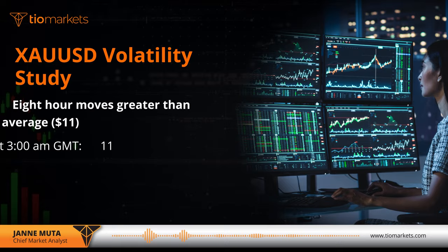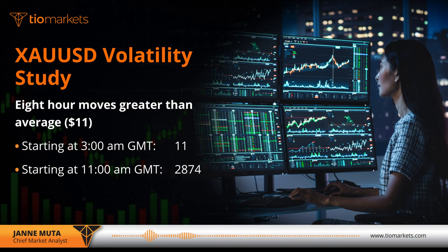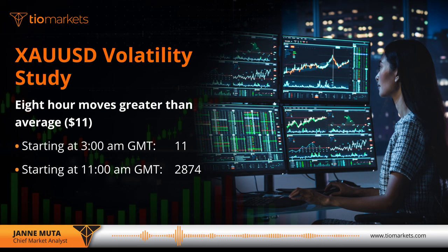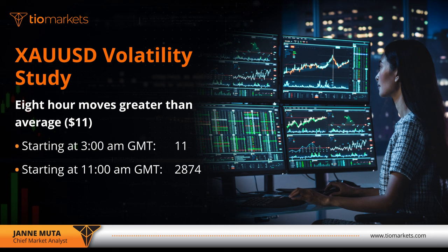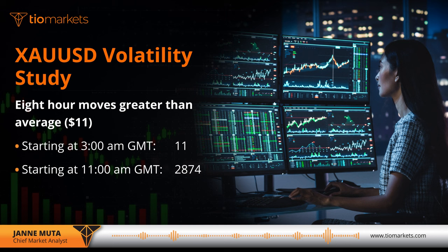I then made a comparison between the 8-hour periods starting at 3am GMT and those starting at 11am GMT. My question was: how often over these time periods did price move more than the average of $11? The difference is very clear. During the Asian session, only 11 times out of 13,247 observations was there movement bigger than $11 during that 8-hour period. But for the period starting at 11am GMT, there were almost 2,900 times when the market moved more than the average. So clearly we need to be trading gold in the European afternoon hours and the early US market hours.